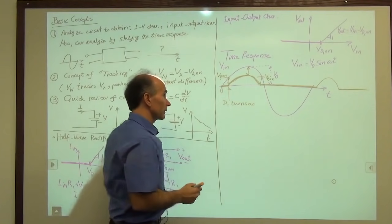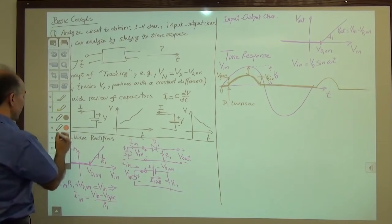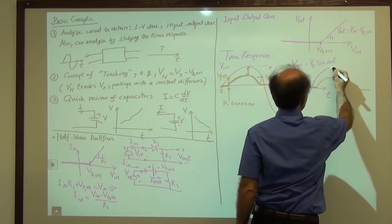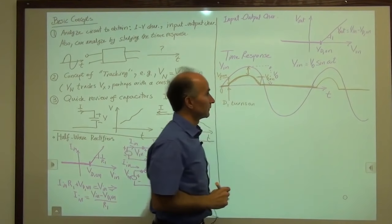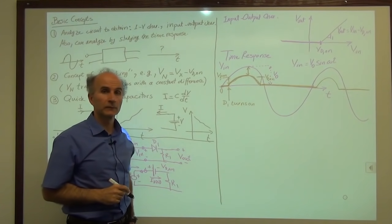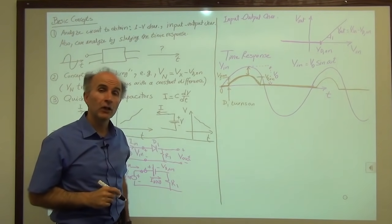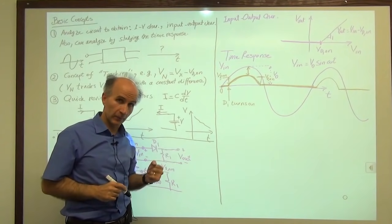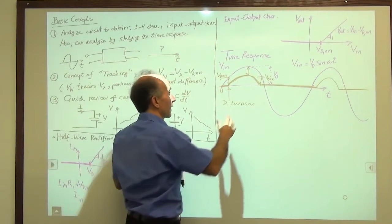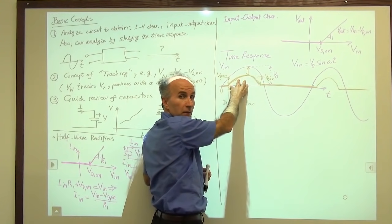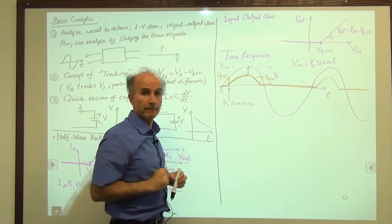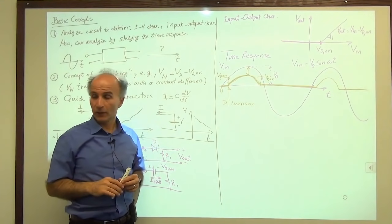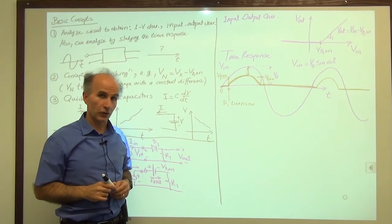This is called a half-wave rectifier. It is called a rectifier because it distinguishes between positive and negative inputs. It's called half-wave because it allows half of the waveform to go to the output and blocks the other half. It has some interesting applications, and because our time is up, we'll come back to this in the next lecture. I will see you next time.